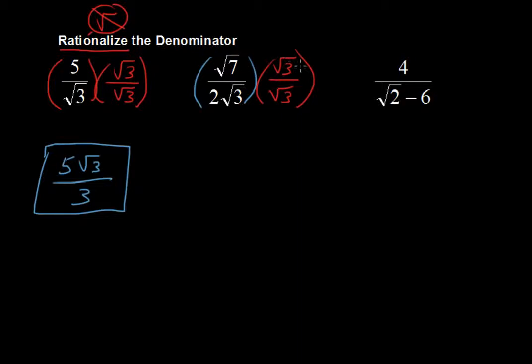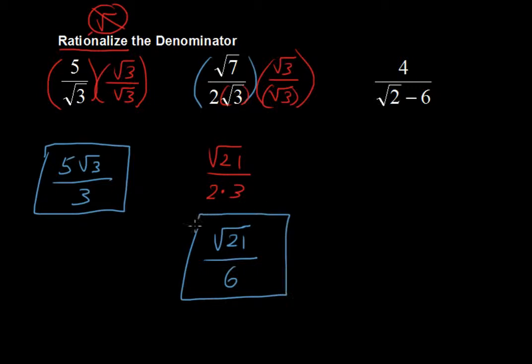And square root of 7 times the square root of 3 gives us now the square root of 21. And in the denominator, we have 2 times 3. 2 times, and then the square root of 3 times the square root of 3 is just 3. So I am just going to show that. Then the next step is the square root of 21, still in the numerator, we can't simplify that anymore, and 6 in the denominator. So square root of 21 over 6, and we are done with that one. We have rationalized the denominator.